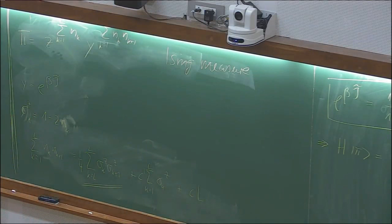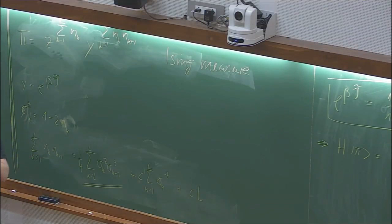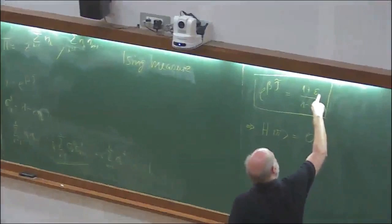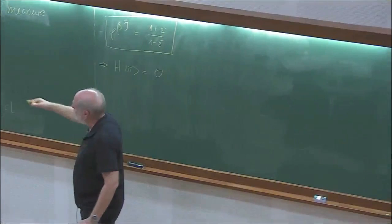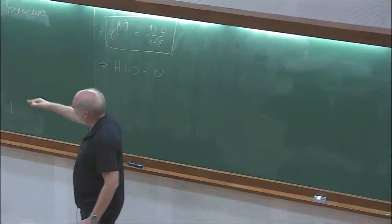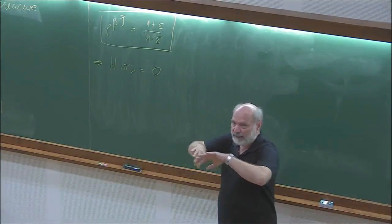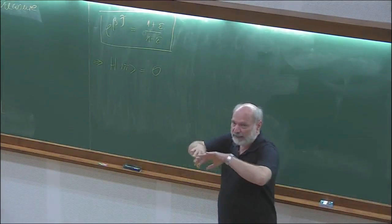How can you understand this intuitively? If you think of the Ising ferromagnet, spins tend to align. In particle language, you favor blocks of particles and blocks of vacancies rather than alternating 1,0,1,0 configurations. This is indeed the case for epsilon < 1—looking at the table of rates, block formation is favored. Epsilon < 1 means the Ising ferromagnet, while positive epsilon is the anti-ferromagnet where you favor alternating 1,0,1,0 configurations.